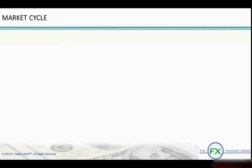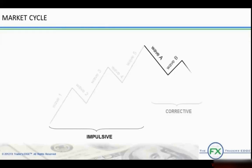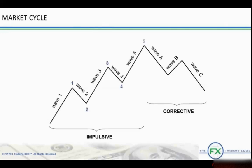One complete cycle consists of eight waves. A movement will unfold in its primary direction in a series of five waves labeled one through five. This five-wave impulsive sequence is also called a motive wave, or simply a five. The five-wave pattern is followed by a three-wave corrective sequence, also called a three. The impulsive sequence is numbered one through five, and the corrective sequence is labeled A, B, C.